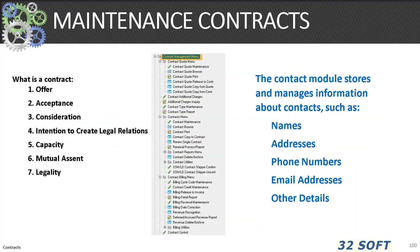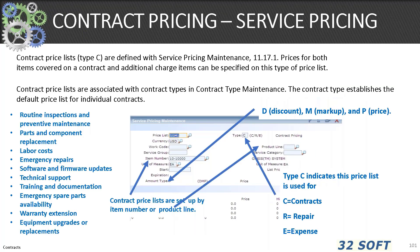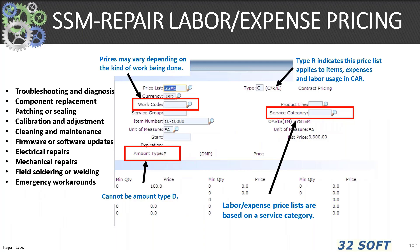One of the ways to increase revenue and continue your relationship with customers who purchase your products is to institute maintenance and service contracts. The contract module of QAD or SSM stores and manages information about contracts such as names, address, phone number, email, and other details such as price and schedule. We'll have another webinar on contracts in November.